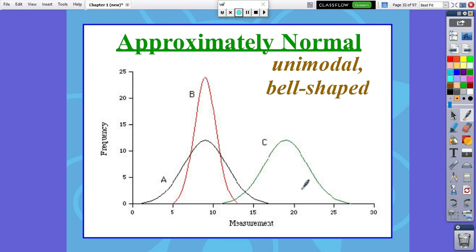A and C are both approximately normal. They have about the same spread, the same measure from max to min, but the centers were different. If we compare B to C, they are both approximately normal, both bell-shaped, but they both have different centers and different spreads.